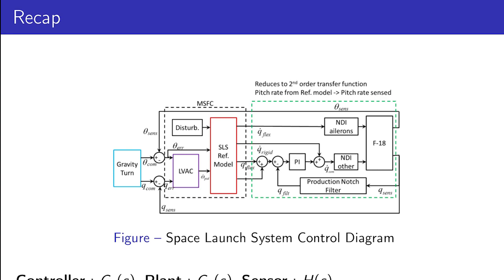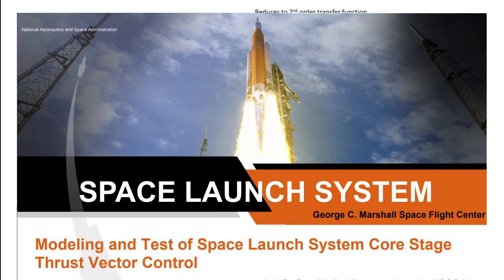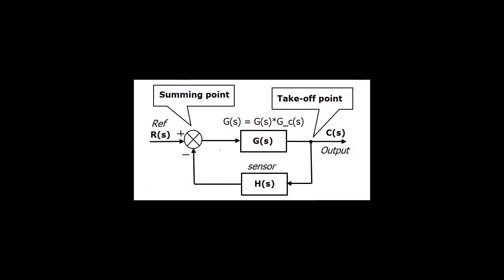Here we have a typical block diagram of a control system. The system we want to control could be the Space Launch System or a satellite. The controller has elements like GC(s), which is the controller itself, feeding the signal to the plant GP(s). The plant is your system, and lastly you have a sensor H(s). We are working in the S domain, which represents the Laplace domain. The PID control format is given by KP plus KI over S plus KD times S.